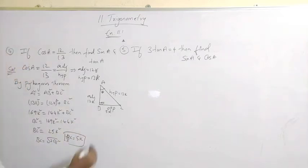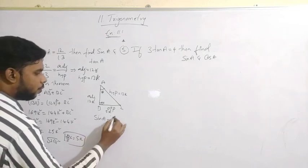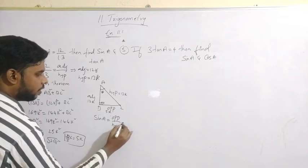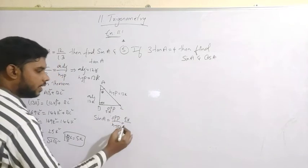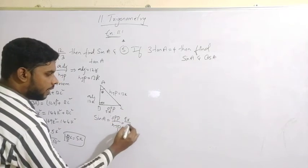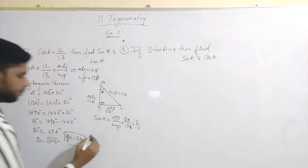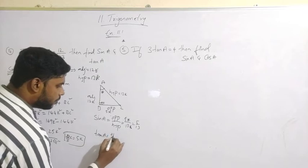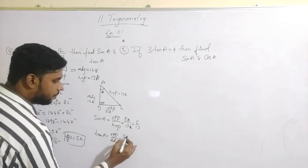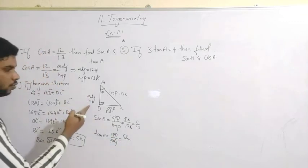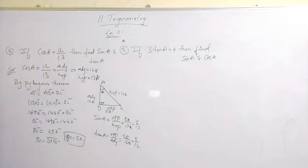Now we can find sin A and tan A. Sin A equals opposite by hypotenuse: opposite is 5K and hypotenuse is 13K. The K cancels, giving sin A equals 5 by 13. Similarly, tan A equals opposite by adjacent: opposite is 5K and adjacent is 12K. K cancels, giving tan A equals 5 by 12.